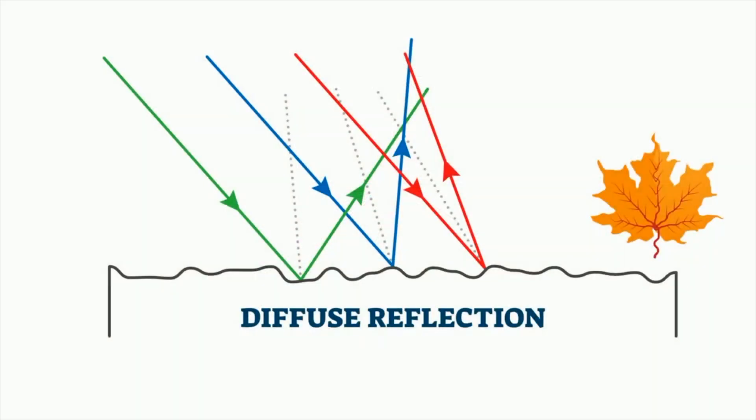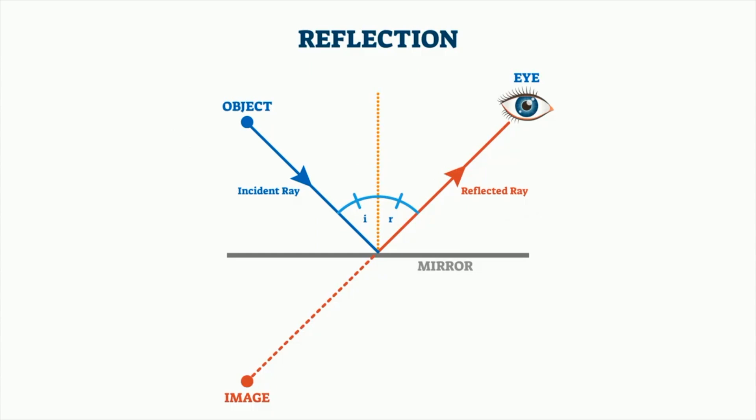During diffuse reflection, remember the light is scattered in many different directions. With specular reflection, the law of reflection states that the angle of reflection of a ray equals the angle of incidence. So, let's identify a couple of items.